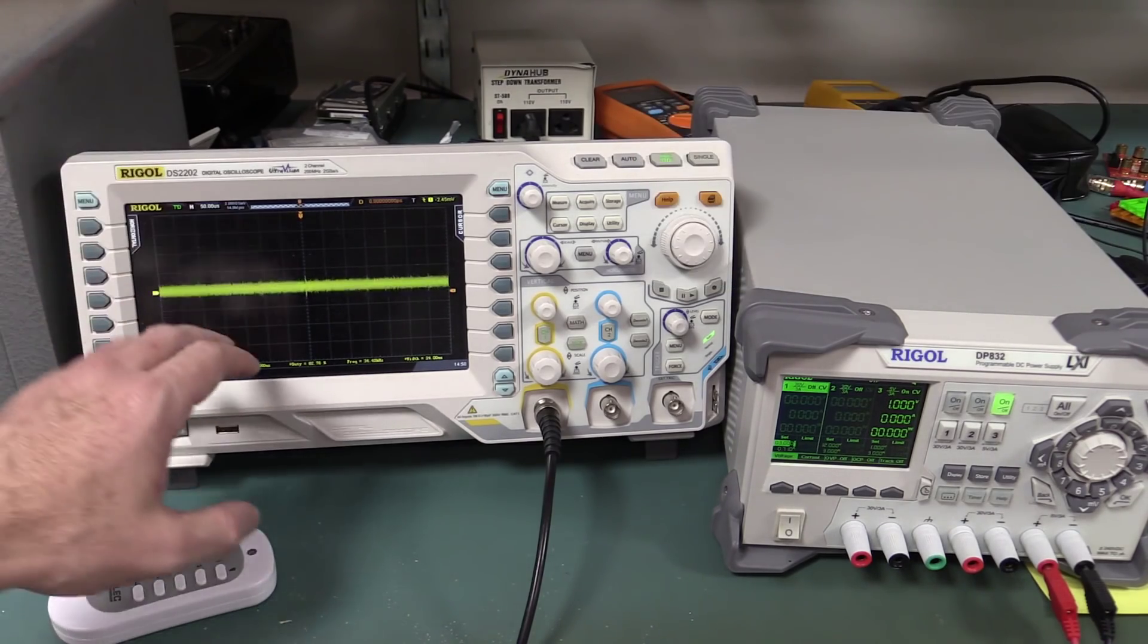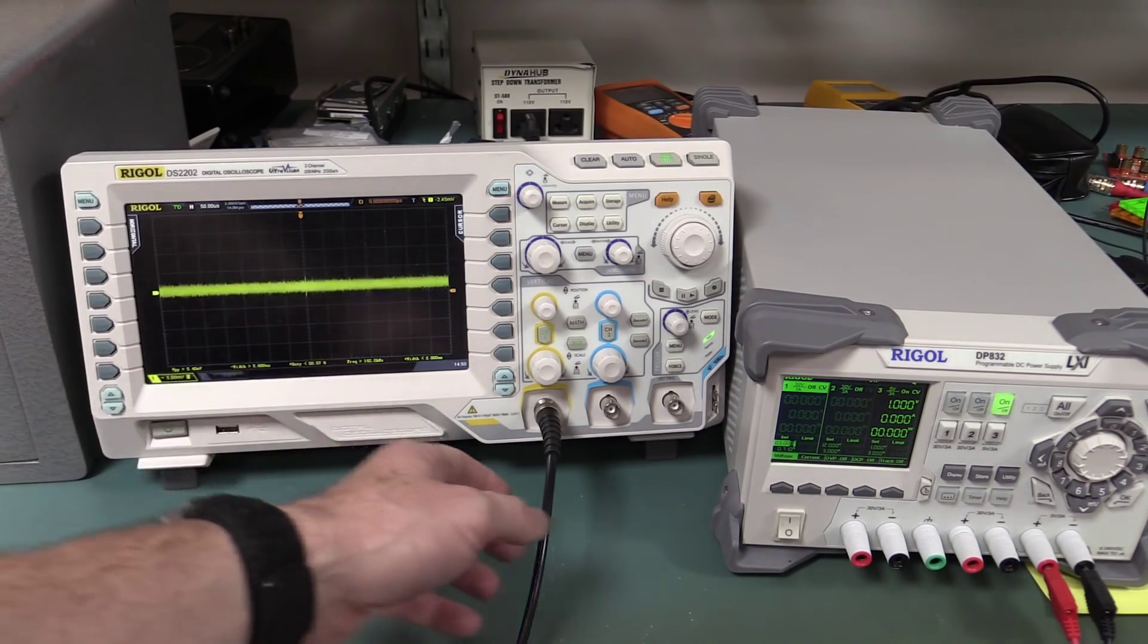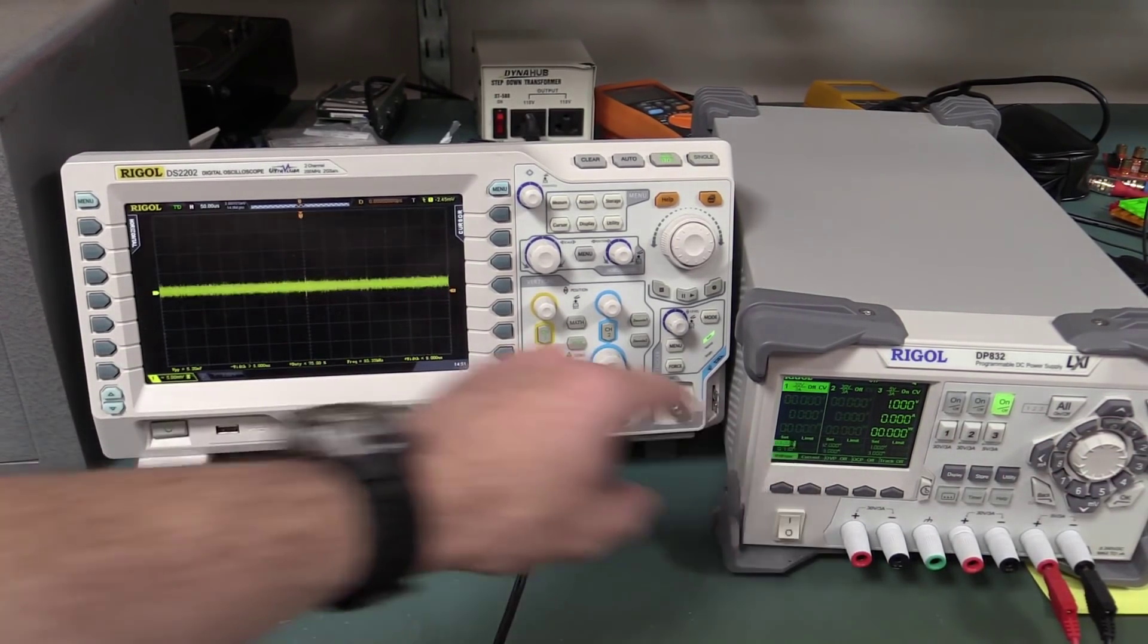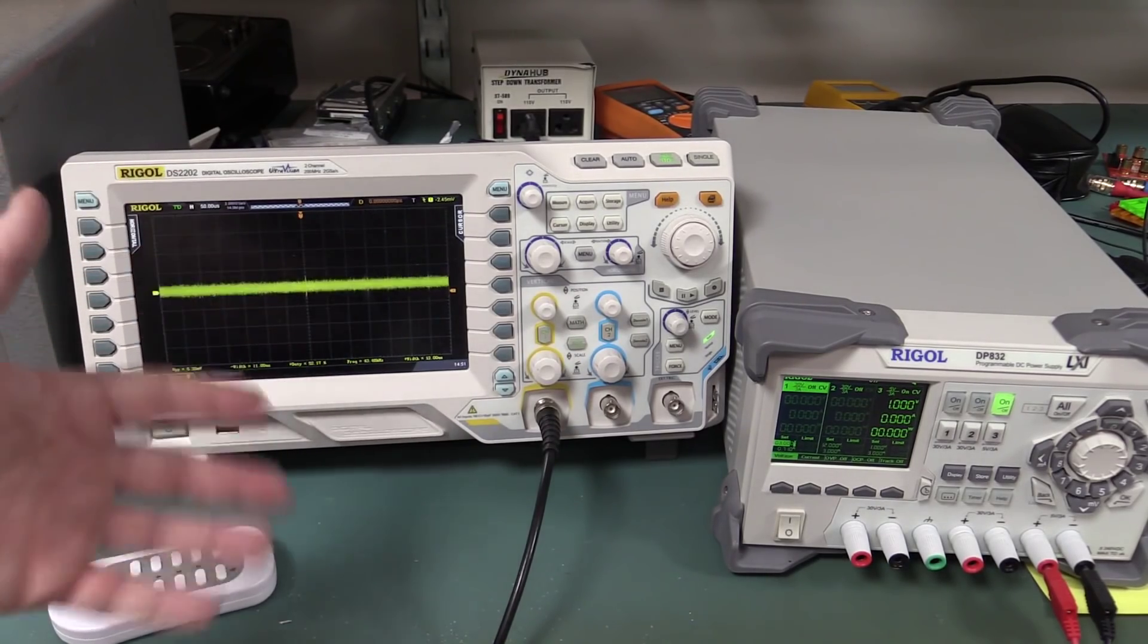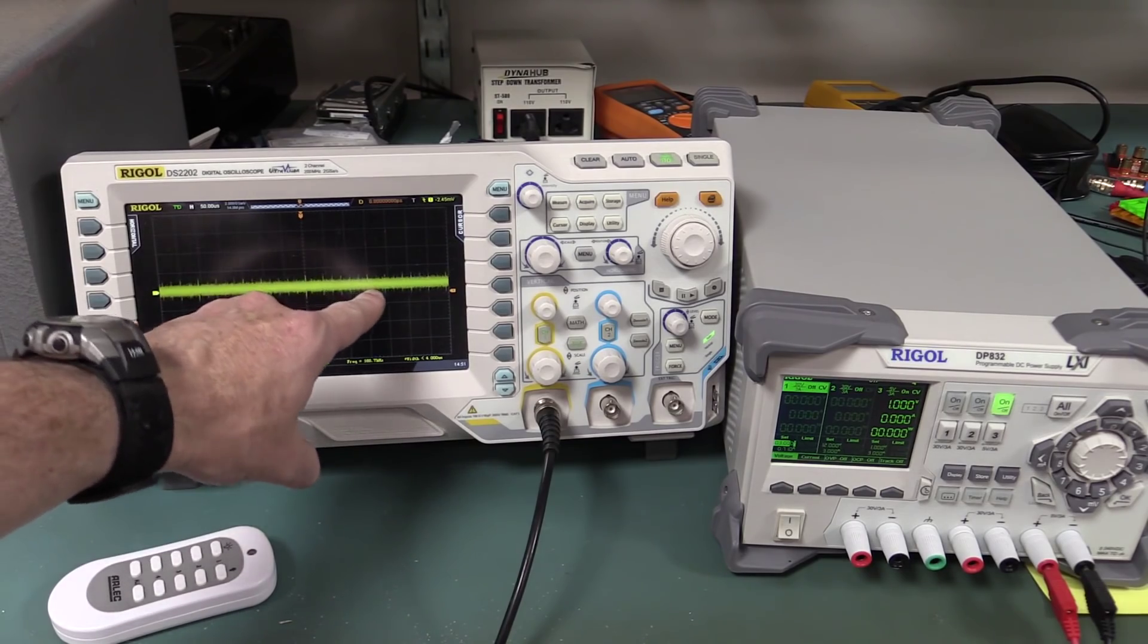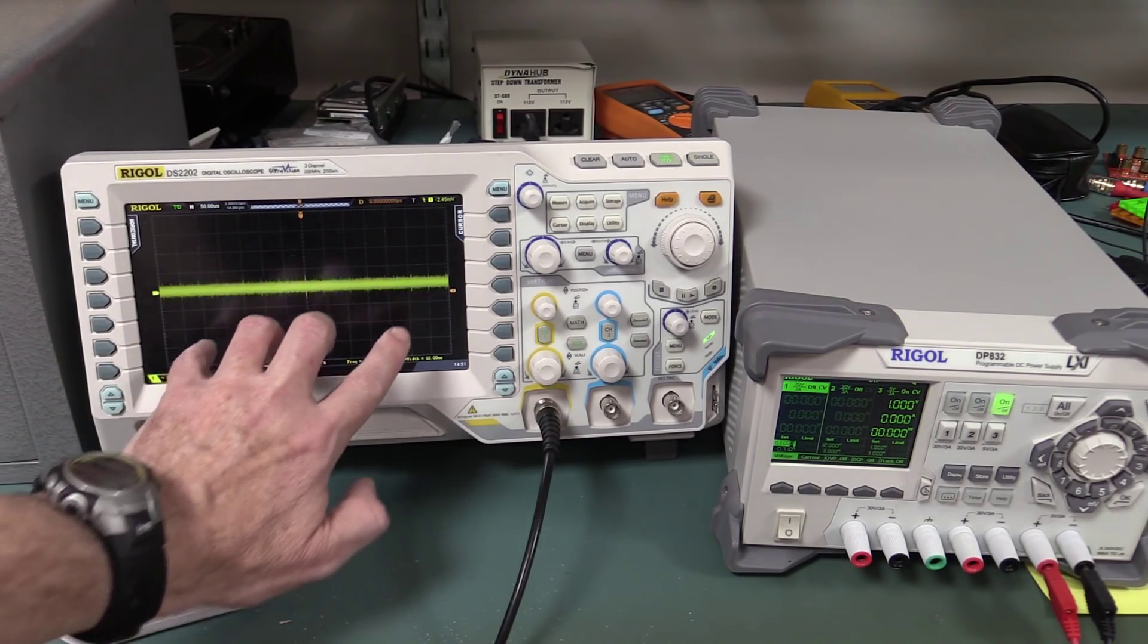Now, what I've got here is my scope set to 5 millivolts per division. I've just got a BNC to banana plug, I'm just AC coupling measuring the output noise of this power supply, like, you know, just something really simple, okay? And we can see that there's something there, whoa, look at that.